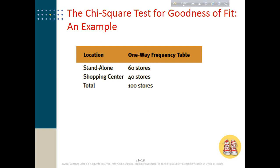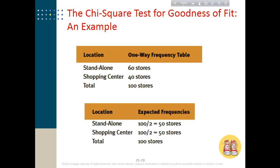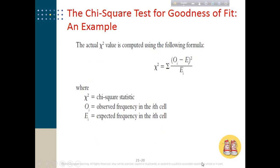The expected frequency is that the number of stores in a standalone location and the number of stores in a shopping center are the same — that is, 50 and 50. What we will test is whether the observed frequency and the expected frequency are the same. So the expected frequency is 50/50, and the observed frequency is 60/40.